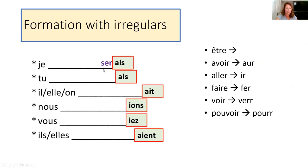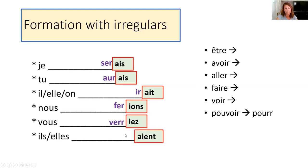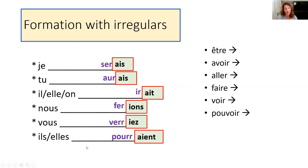Here are a few examples in practice. 'Je serais' — I would be. 'Tu aurais' — you would have. 'Il/elle/on irait' — he, she or we would go. 'Nous ferions' — we would do. 'Vous verriez' — you would see. 'Ils/elles pourraient' — they would be able to.